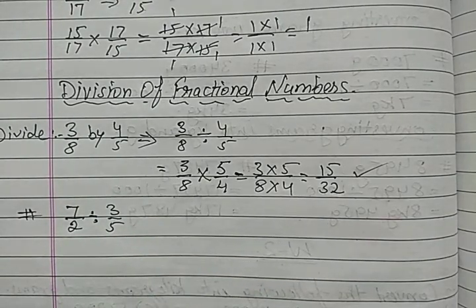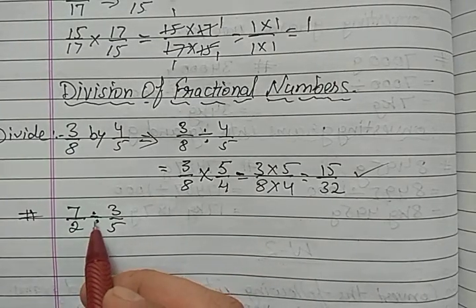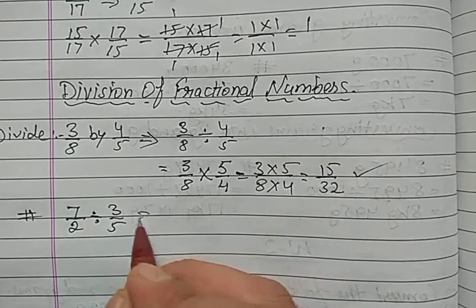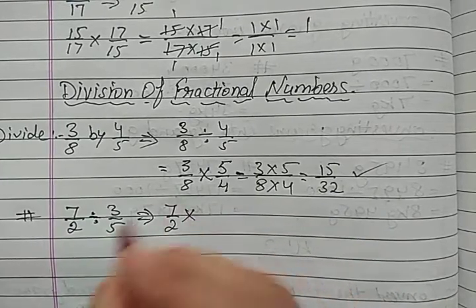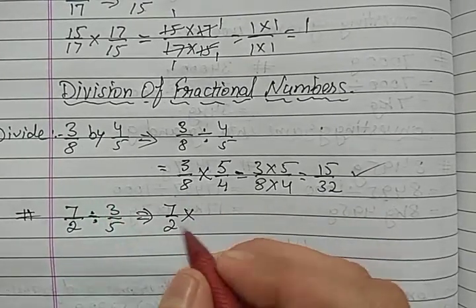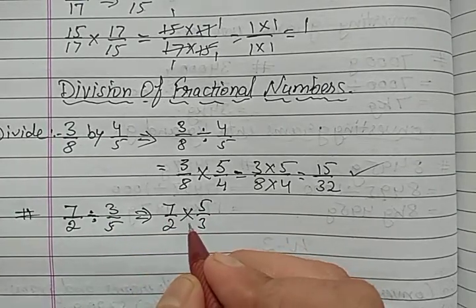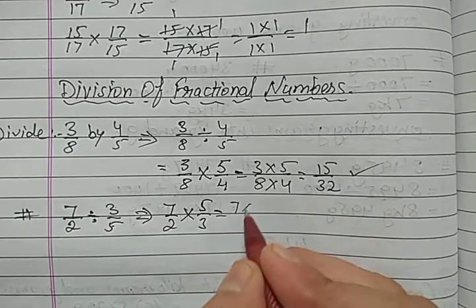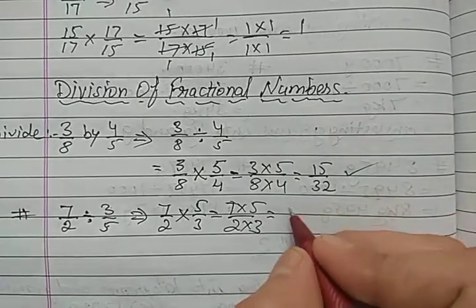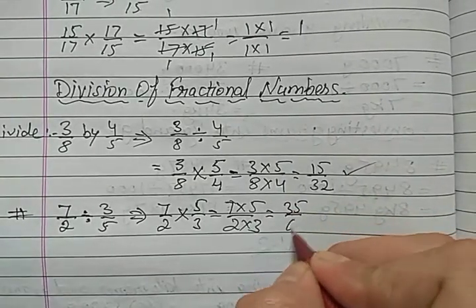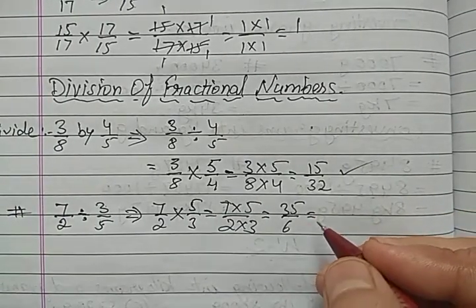How can we divide? First of all convert the division sign into multiplication sign. We write the reciprocal of the divisor — divisor is 3 upon 5, so it becomes 5 upon 3. Now multiply numerator with numerator and denominator with denominator. 7 × 5 is 35 upon 3 × 2 is 6. This is an improper fraction, so we convert it into a mixed fraction.